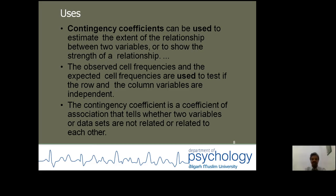It can be interpreted that the correlation between the two variables is positive. Uses of the contingency coefficient: it helps you to examine and estimate the extent of the relationship between two variables, or to show the strength of a relationship. The observed cell frequencies and the expected cell frequencies are used to test if the row and column variables are independent. The contingency coefficient tells whether two variables or data sets are related or not.